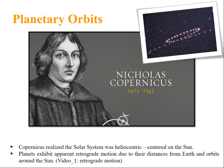Copernicus was the first person to realize that the solar system was actually heliocentric, that is centered on sun. He lived from 1473 to 1543. Planets exhibited apparent retrograde motion due to their distance from earth and orbits around the sun. The picture shows the retrograde motion of Mars when viewed from earth.